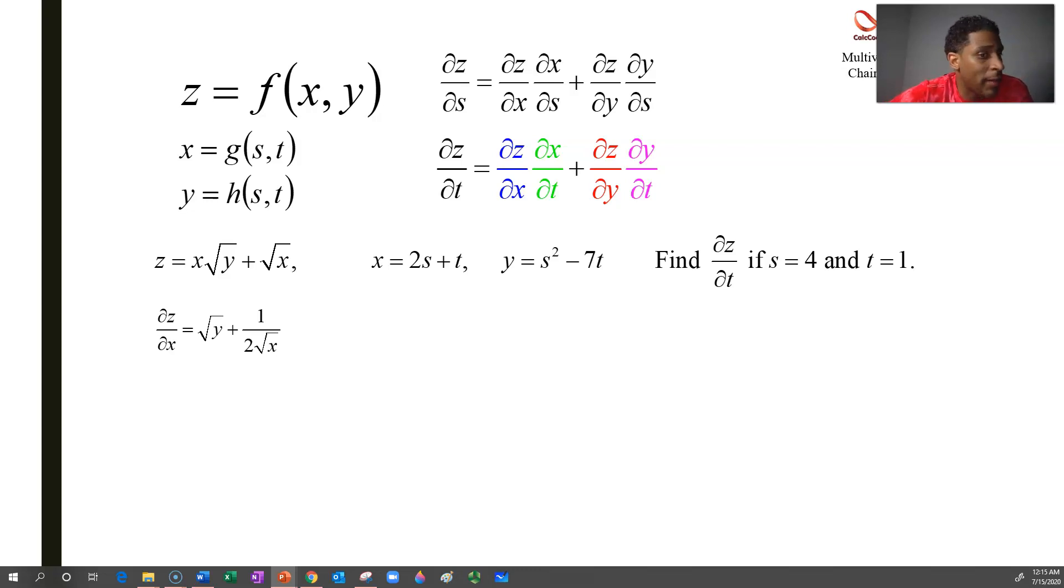What about z's derivative with respect to y? The x is treated like a constant. It's 1 over 2 root y. So it'll be x over 2 root y. And it wouldn't be anything when the second term, the root x's derivative is 0 with respect to y. Okay, great. Halfway done with our derivatives.